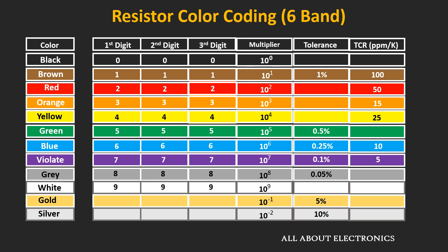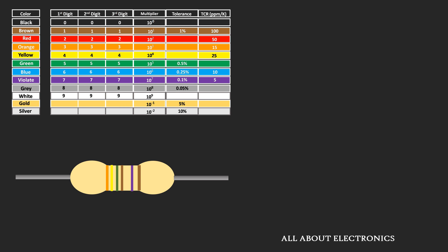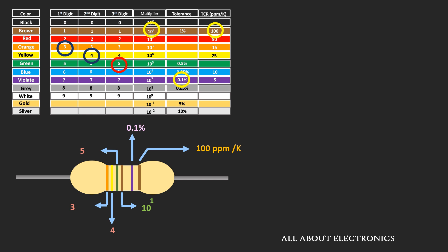Here is an example of a 6-band resistor. The first band is orange, defining the value of 3. The second band is yellow, defining 4. The third band is green, defining 5. The fourth band is brown, defining a multiplying factor of 10. The fifth band is violet, representing a tolerance of 0.1%. The sixth band is brown, indicating a temperature coefficient of resistance of 100 ppm per degree Kelvin.